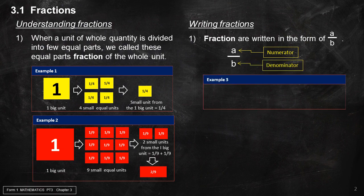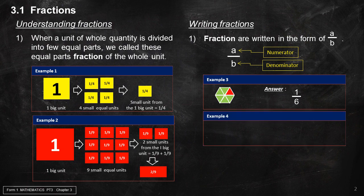Example 3: In this diagram, the red portion is 1 over 6 of the big unit. Example 4: In this diagram, the 3 red portions represent 3 over 6 of the big unit, or after simplifying to the lower term, 1 over 2, or half of the big unit.